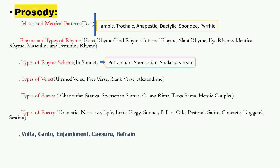Important poetic terms include: volta, canto, enjambment, and caesura. A question on caesura was asked in 2019. Volta appears in sonnets — in the Petrarchan sonnet there is a sudden shift of theme in the last stanza known as the volta. Canto is like a stanza — The Rape of the Lock is written in cantos. Caesura is a natural pause found in poetry.